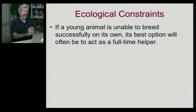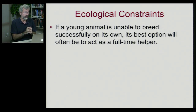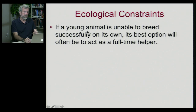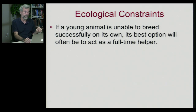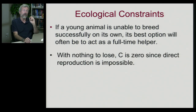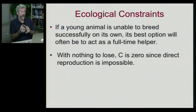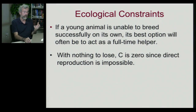What we want to think about is what ecological circumstances might predispose some species towards eusociality and not others. These are often referred to as ecological constraints. If a young animal is unable to breed successfully on its own because the world is already crowded — as many territories occupied as possible — its best option may be to act as a full-time helper. Since it cannot start its own family, it might as well help mom and dad produce more offspring. In that case, you literally have nothing to lose. Chances of reproducing on your own are very low, so the costs of staying home and helping are essentially zero — C is essentially zero because direct reproduction is impossible.